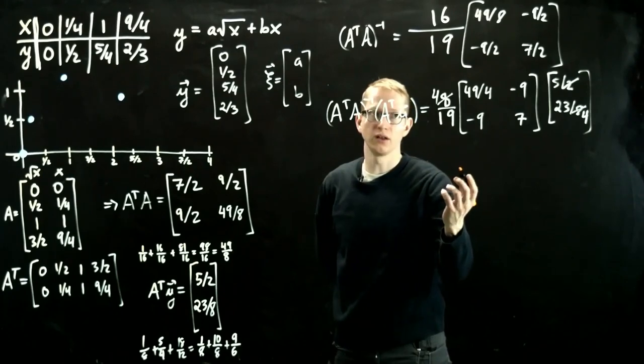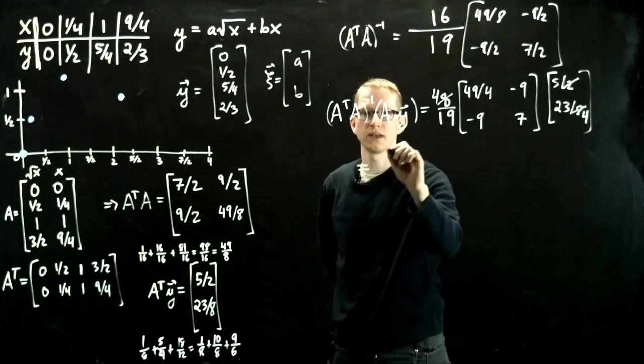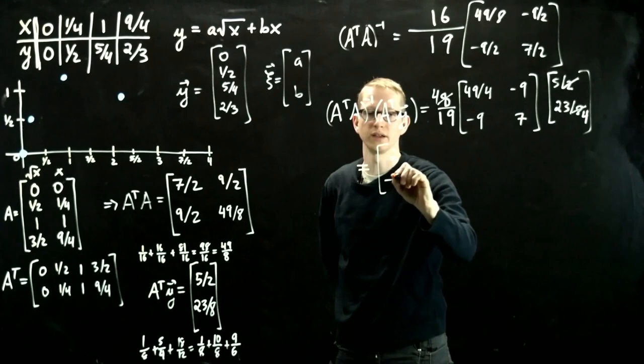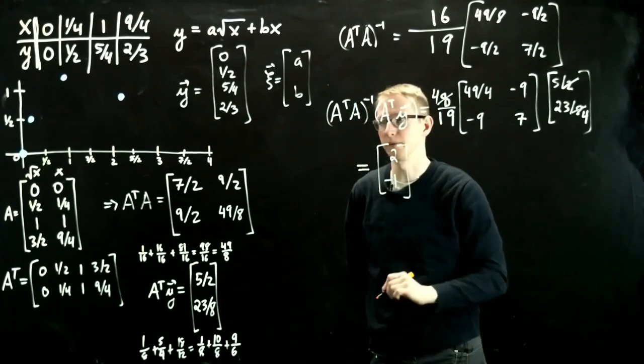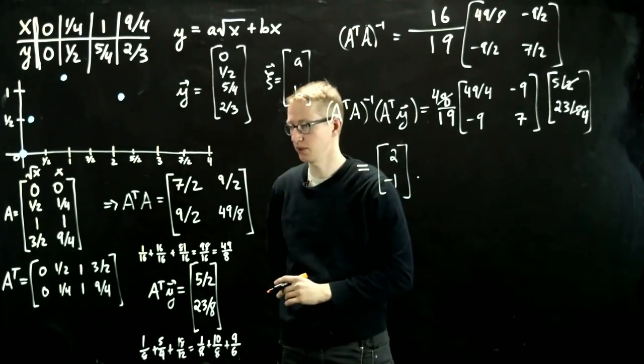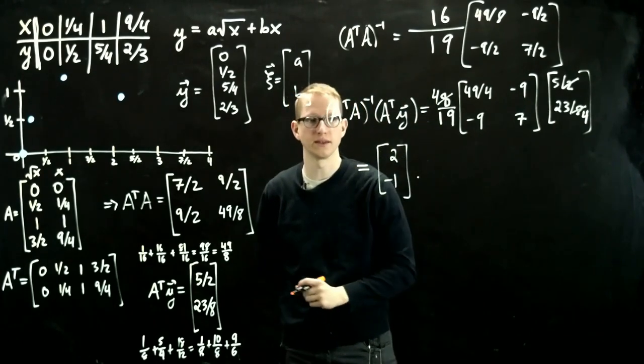So after you multiply all of this out, you work through all the arithmetic, you end up getting 2, negative 1. I'll spare you those details because it's a little bit frustrating to do this right now. It'll be much easier for you to pause and make sure that you get the same exact answer.